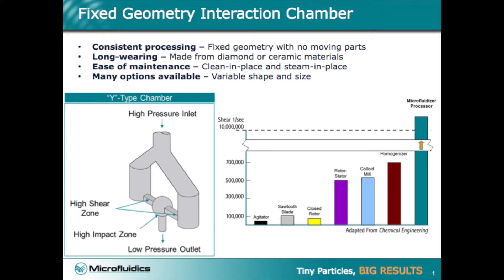The core technology of a microfluidizer is its interaction chamber. Here we will be using a Y type chamber, which is ideal for emulsions and other liquid only formulations. The key features of our interaction chambers are consistent processing, offering repeatable results because of its fixed geometry with no moving parts, ensuring that every microliter gets the same treatment.